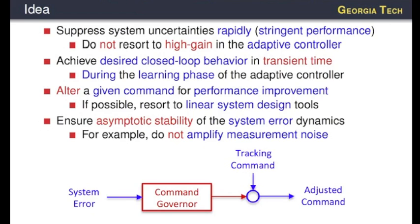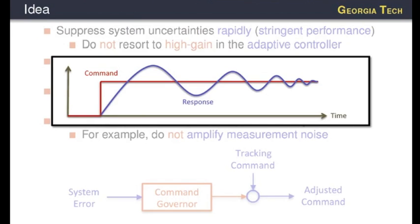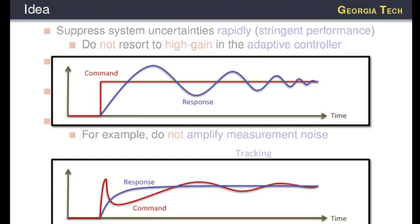Let's consider this graph. I just generated it in PowerPoint, so it's not a physical response. I applied a red command to a system, and our system gives us this blue response. How to improve that response? The idea is: can we change the command in such a way that our system response becomes like this blue line?